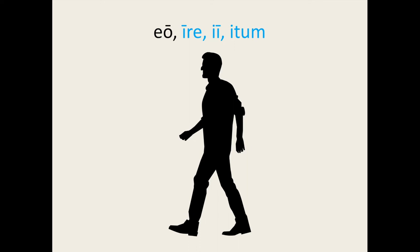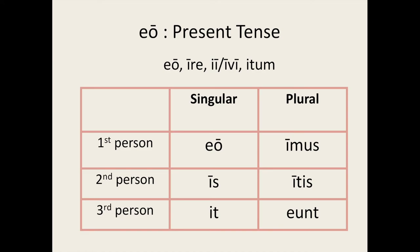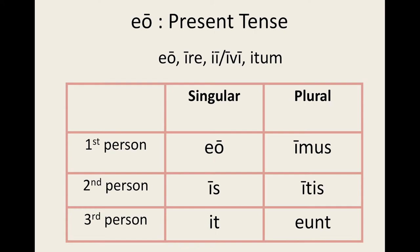Now, eo — 'I go.' It is intransitive. It has the principal parts eo, ire, i, itum. Eo has an alternative third principal part, ivi, which we will explore further when we learn about past tenses. Let's conjugate this verb. Note that with the exception of the first person singular and the third person plural forms, the stem of this verb in the present tense is the letter I. We have: eo — 'I go'; is — 'you (singular) go'; it — 'he, she, it goes'; imus — 'we go'; itis — 'you (plural) go'; and eunt — 'they go.'